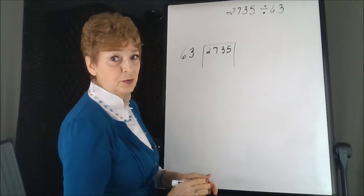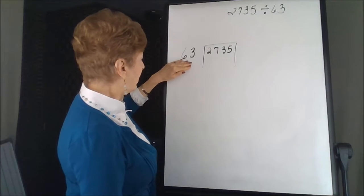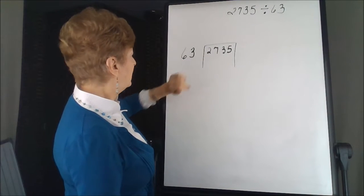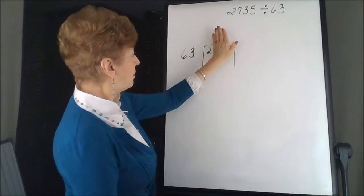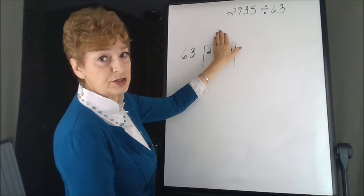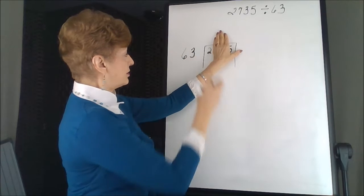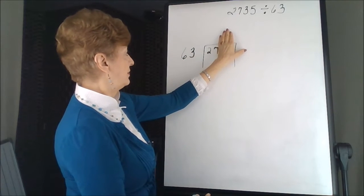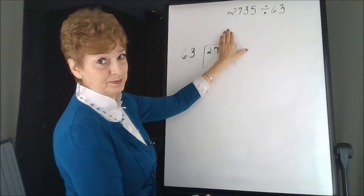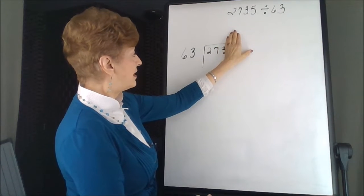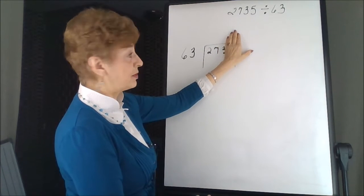One of the first things we're going to have to worry about is, where do we start on this problem? And you can tell by covering up all of the numbers except the first and decide whether 2 is larger than the divisor, 27, 273, finally we have a number that's larger.